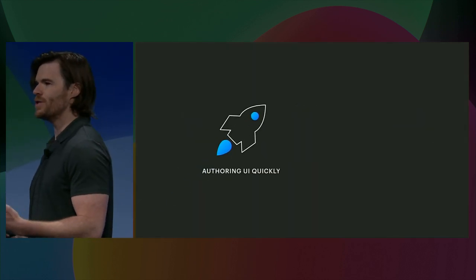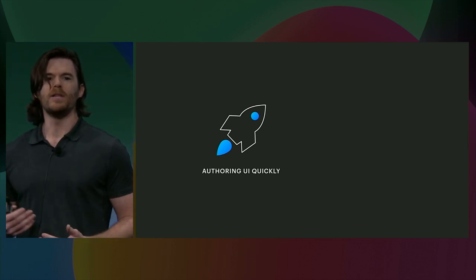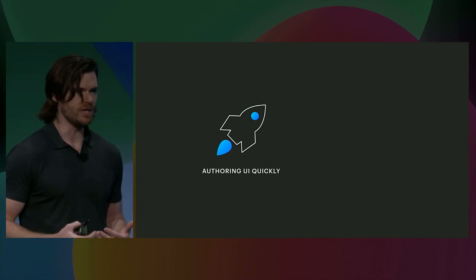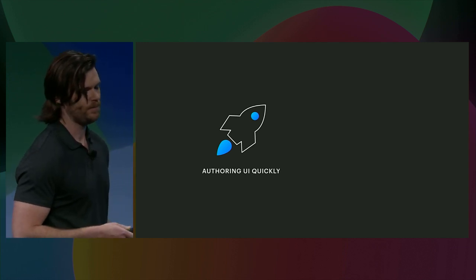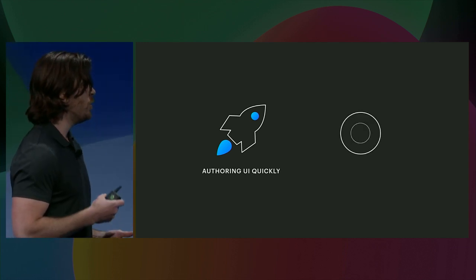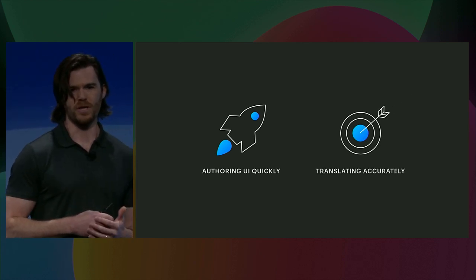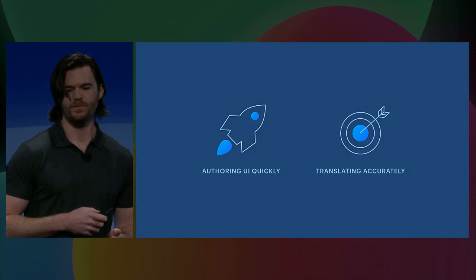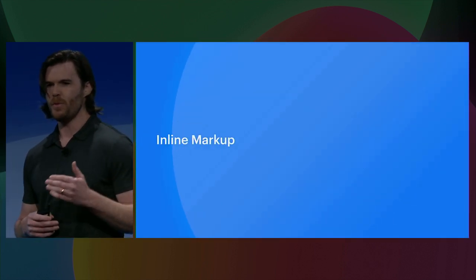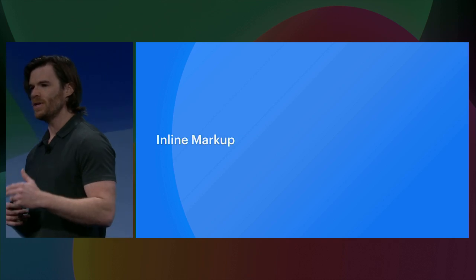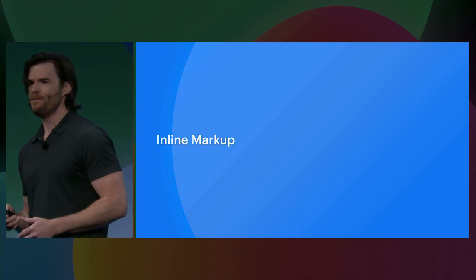However, engineers want to move fast, and as we mentioned, this typically comes at the cost of accurate translations. So how do we ensure we translate that text accurately? One crucial step is in lowering the burden it takes to coordinate translations in their apps. We make it easy for engineers to mark user interface text to be translated by providing them an inline markup text we call FBT.